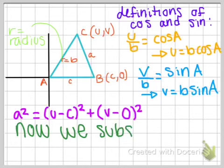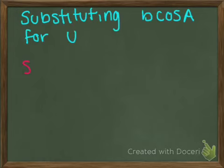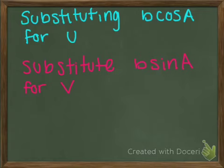And then now we substitute. So for the equation, you have like u minus whatever, and so you would substitute the b cosine A for u, and then where you have the v minus 0 in the second part of the equation, you would substitute the b sine A for the v.